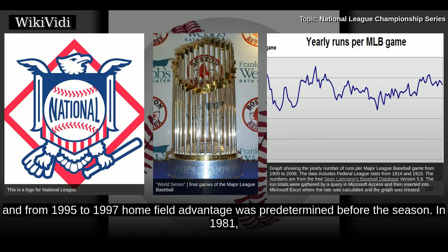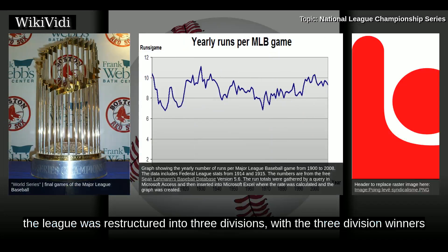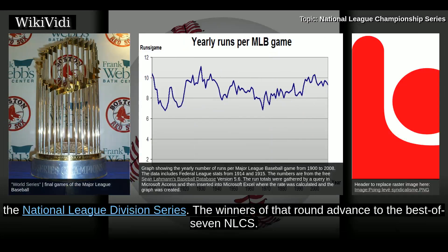In 1981, a divisional series was held due to a split season caused by a player's strike. In 1994, the league was restructured into three divisions, where the three division winners and a wild card team advancing to a best-of-five postseason round — the National League Division Series. The winners of that round advanced to the best-of-seven NLCS.